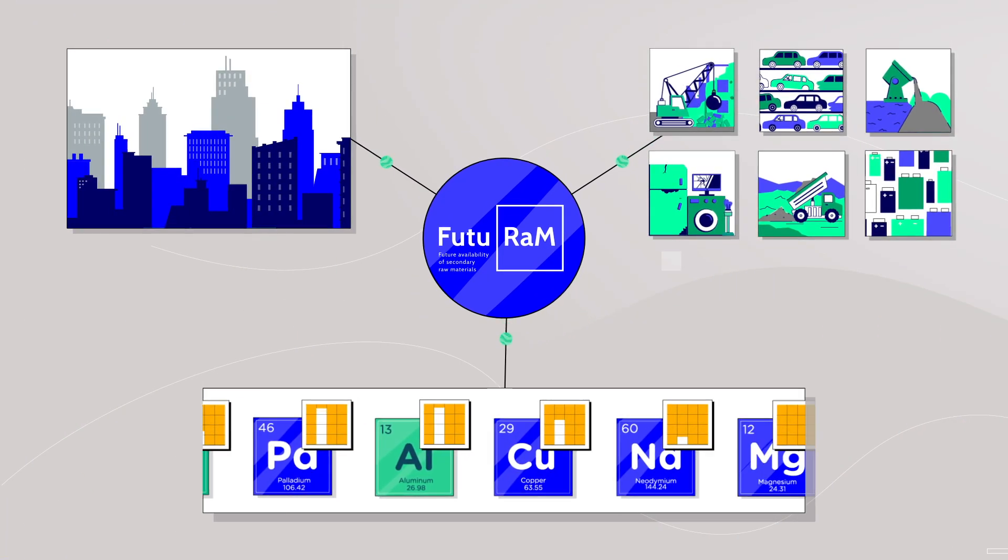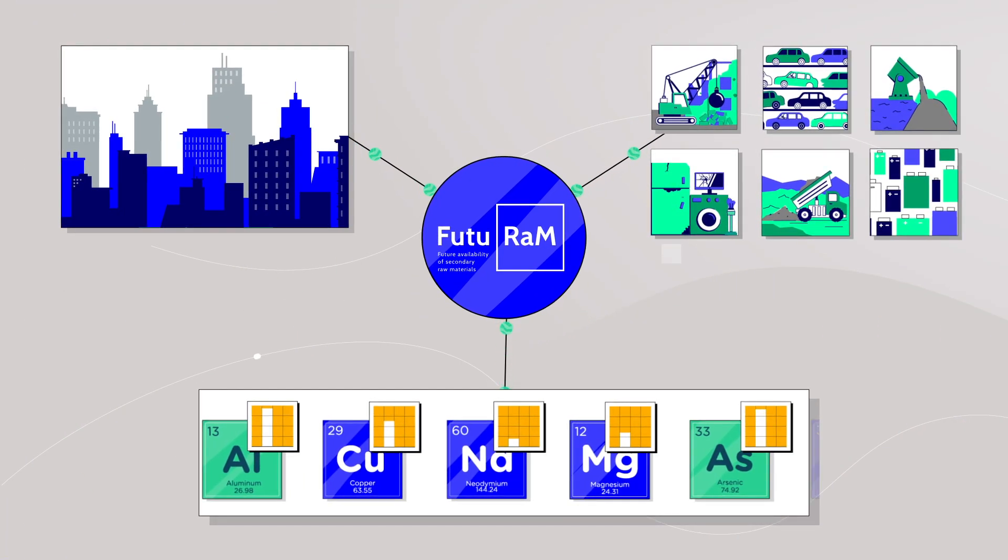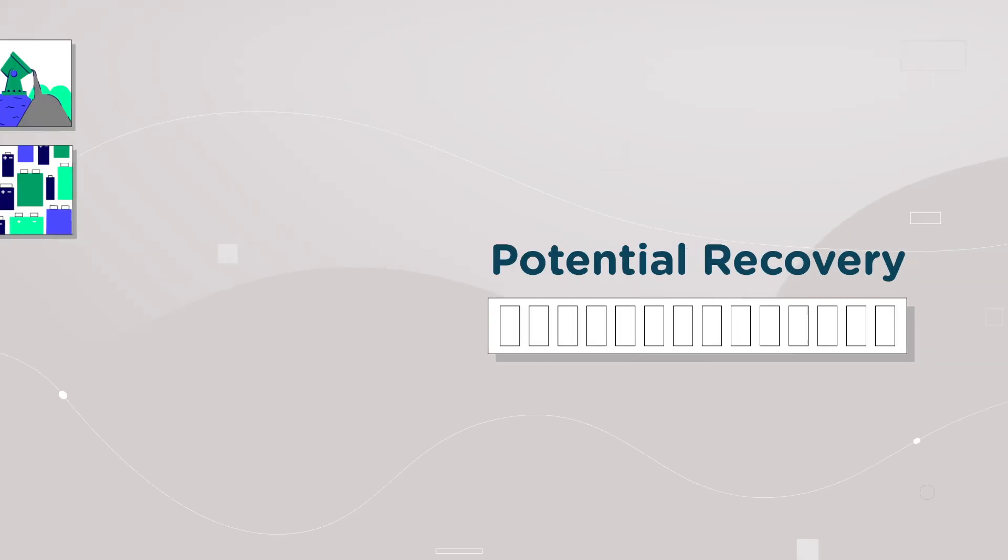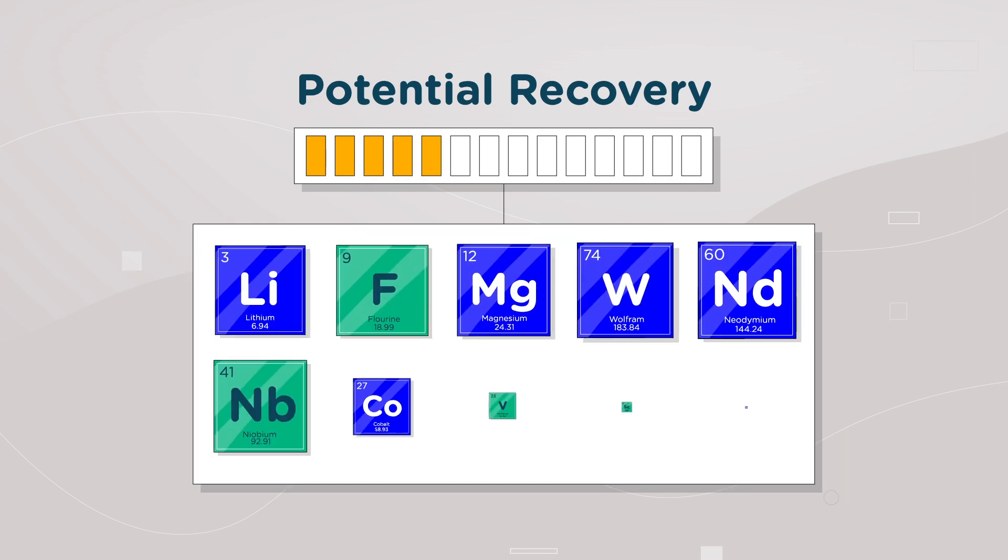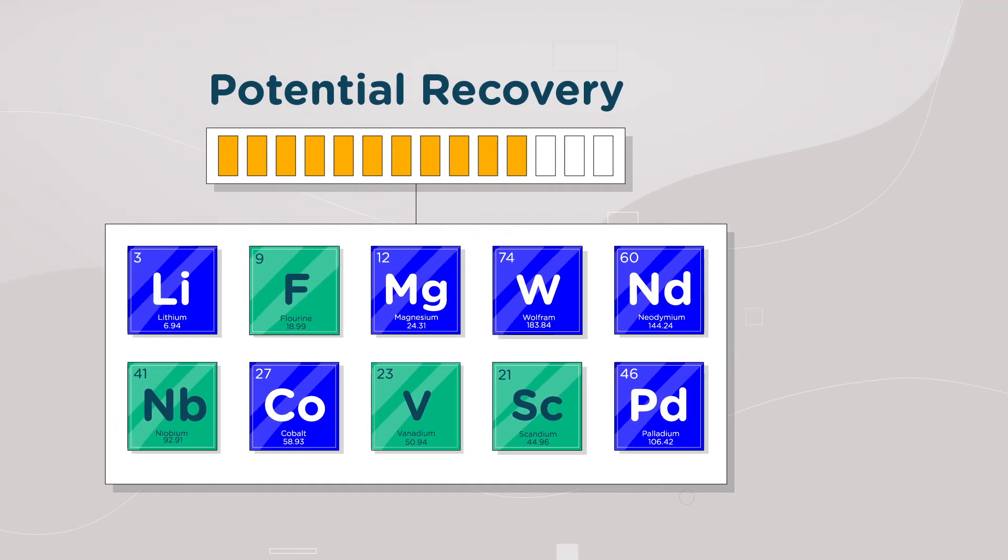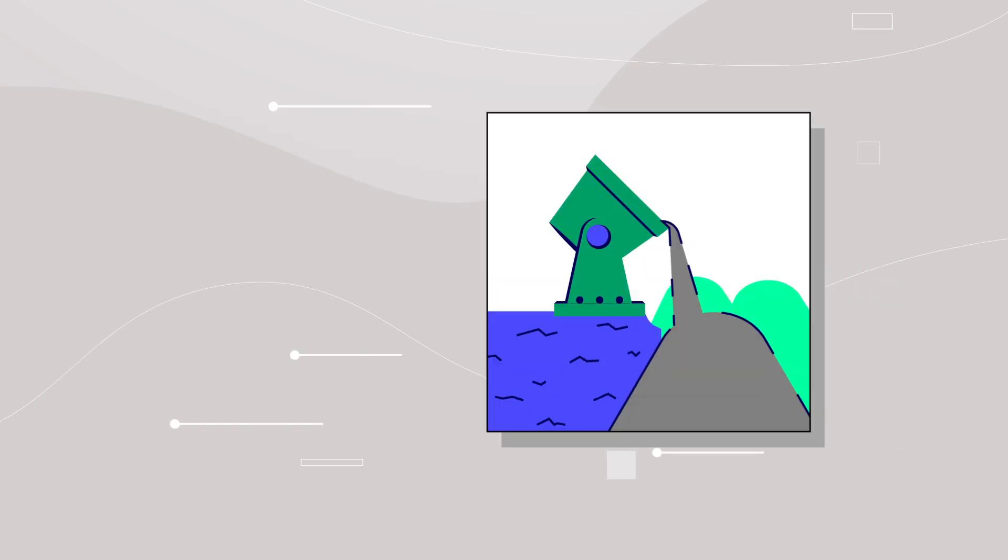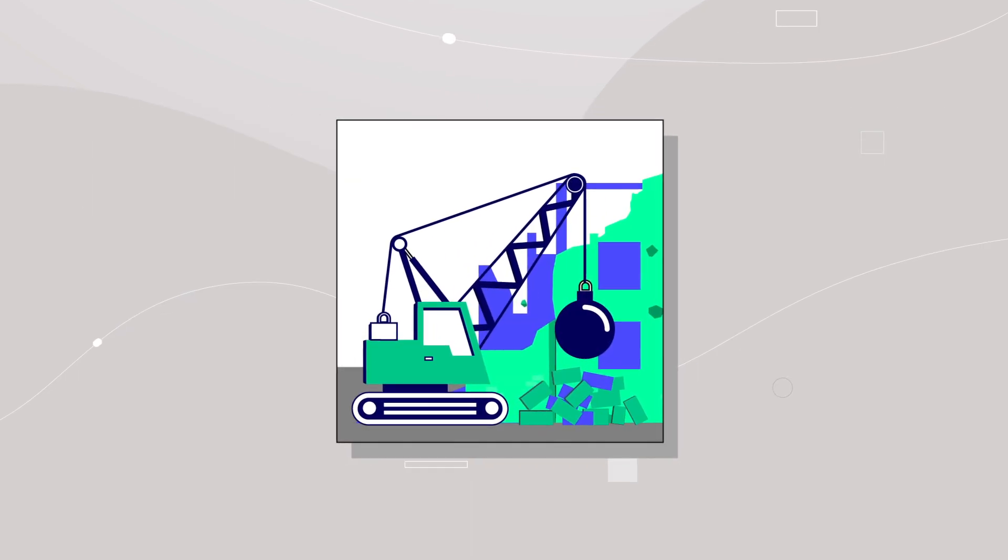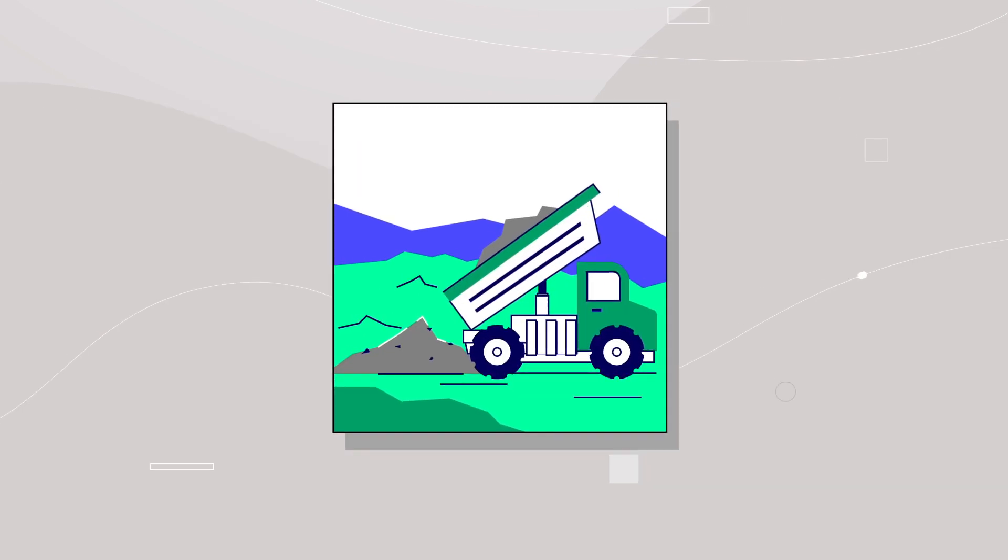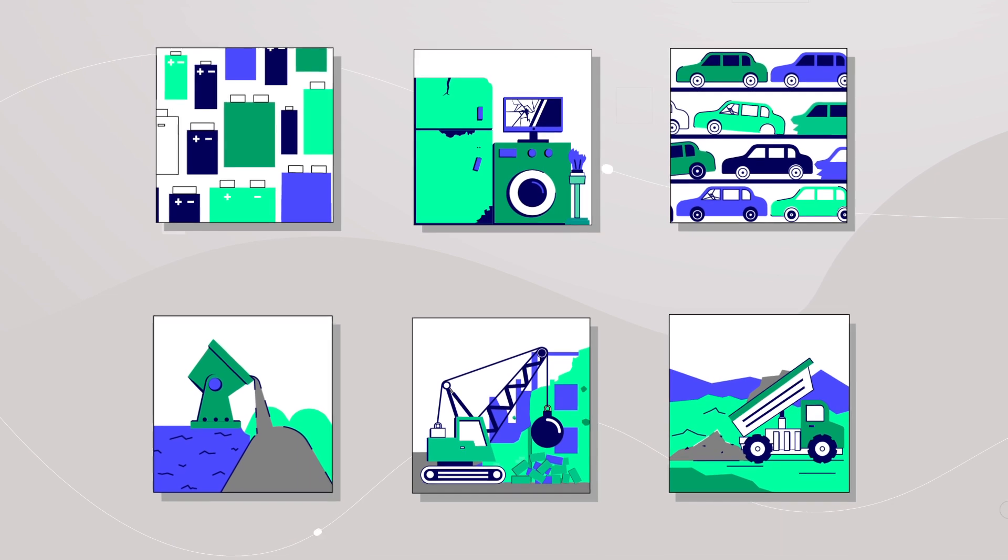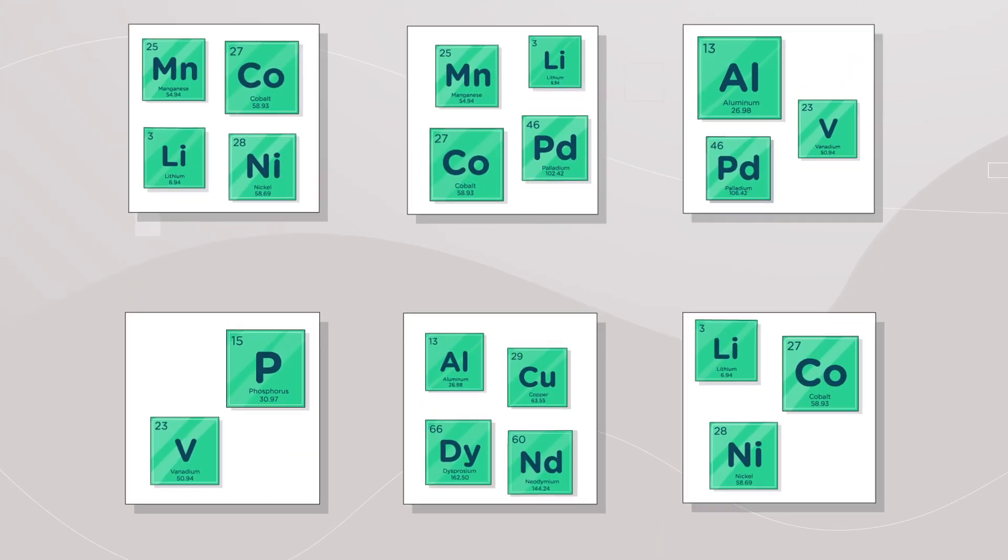Futuram will identify the amount of these vital materials currently in use and in the waste stream and model the potential for their recovery. The project focuses on six waste streams: batteries, electronics, vehicles, slags and ashes, construction and demolition, and waste from historical mining. Each of these represents a potential and important source of critical raw materials.